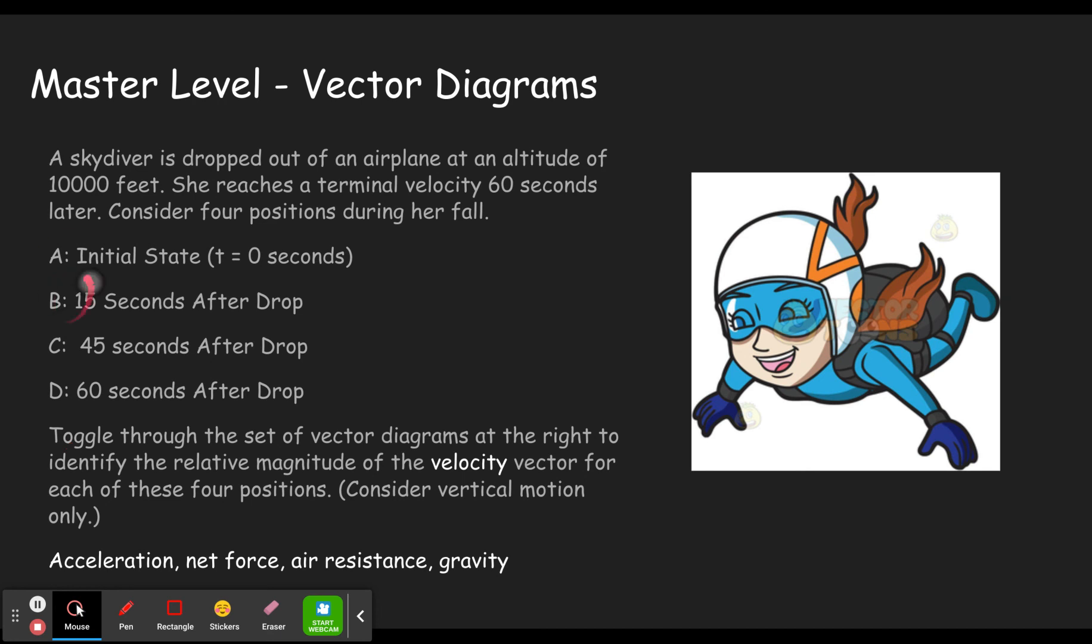And so then we see A, B, C, and D as the person is falling. And you'll have different vectors at different places. And you'll click through and pick the one that has the vectors that actually makes sense.